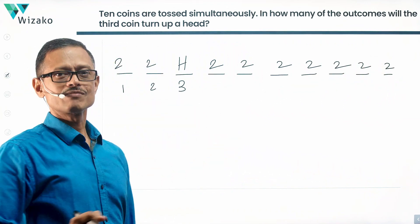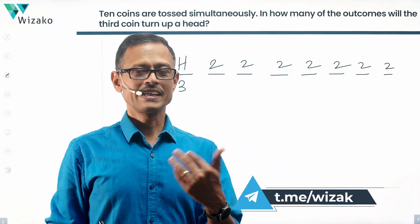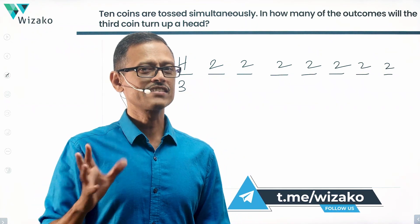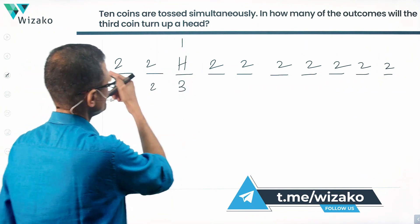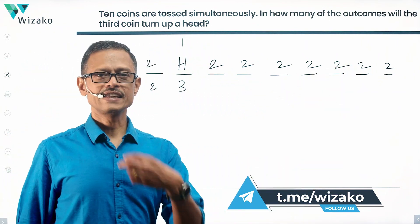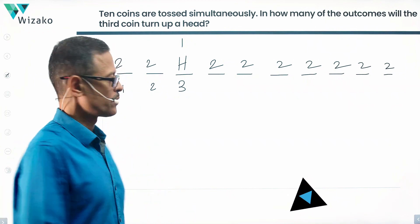Nine of these coins, they don't care. It could be a head or it could be a tail. The only condition that I have to meet is that the third is a head. Third being a head is possible in one way. The remaining nine could be head or tails in two ways.